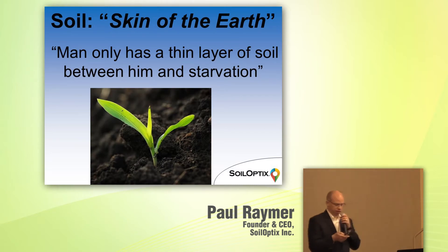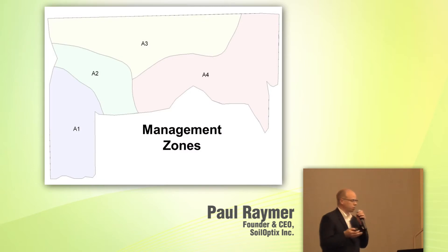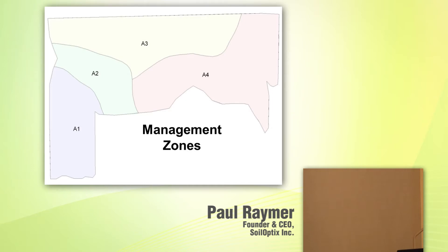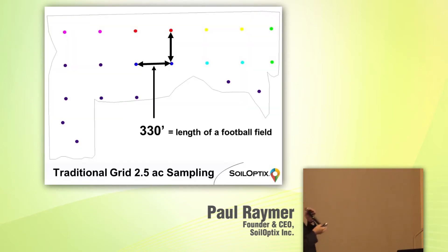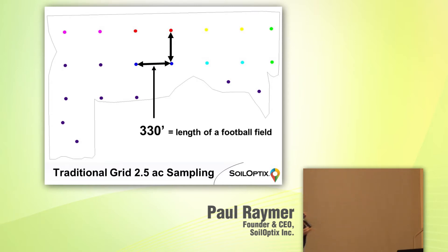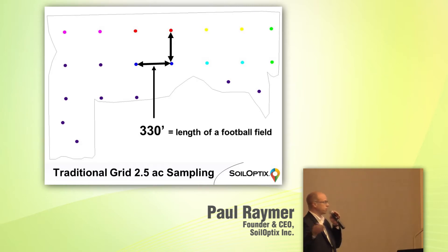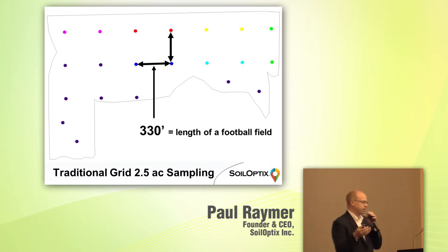We look at soil as a precious resource that all living matter depends on, and we examine our traditional approaches to measuring soil. All of you would know management zones and the different aspects to create those zones. Then we look at traditional grid sampling — a two-and-a-half-acre grid is really the length of a football field, about 330 feet between points.